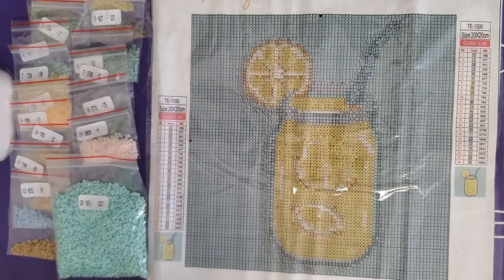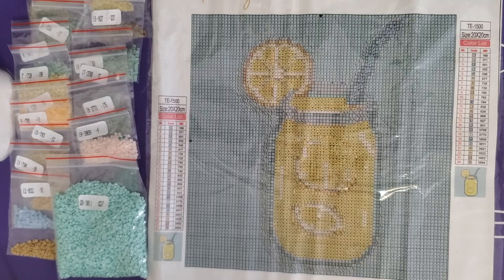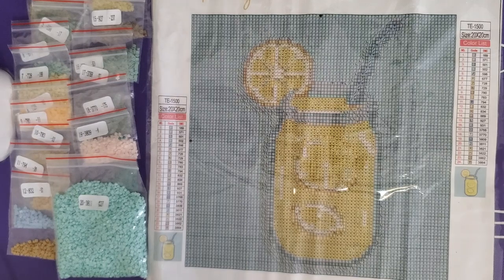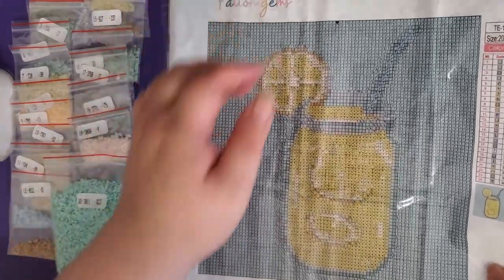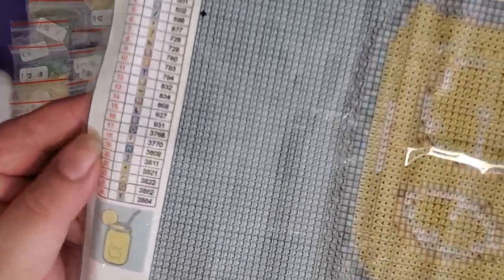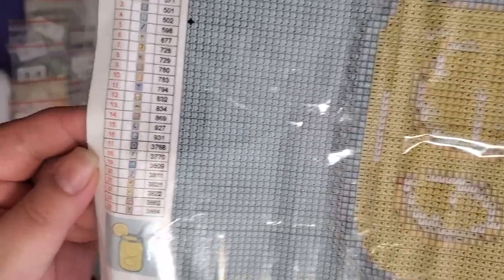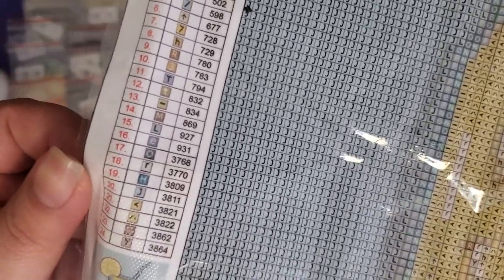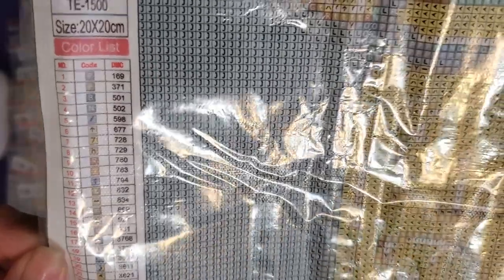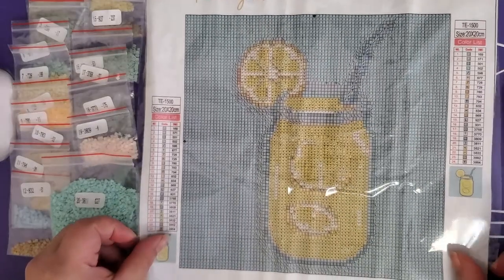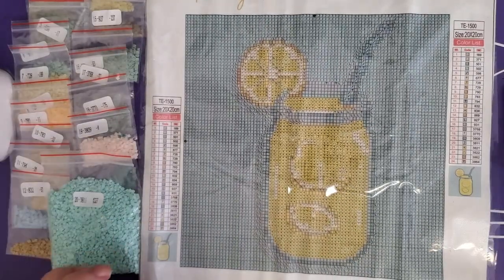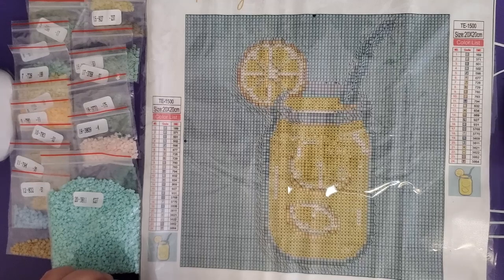First things first, we need to pick a color. This canvas has 24 of them, so I am just gonna make it easy and go with number 20, J as in Juliet, because that is our background color. It's the most predominant thing.